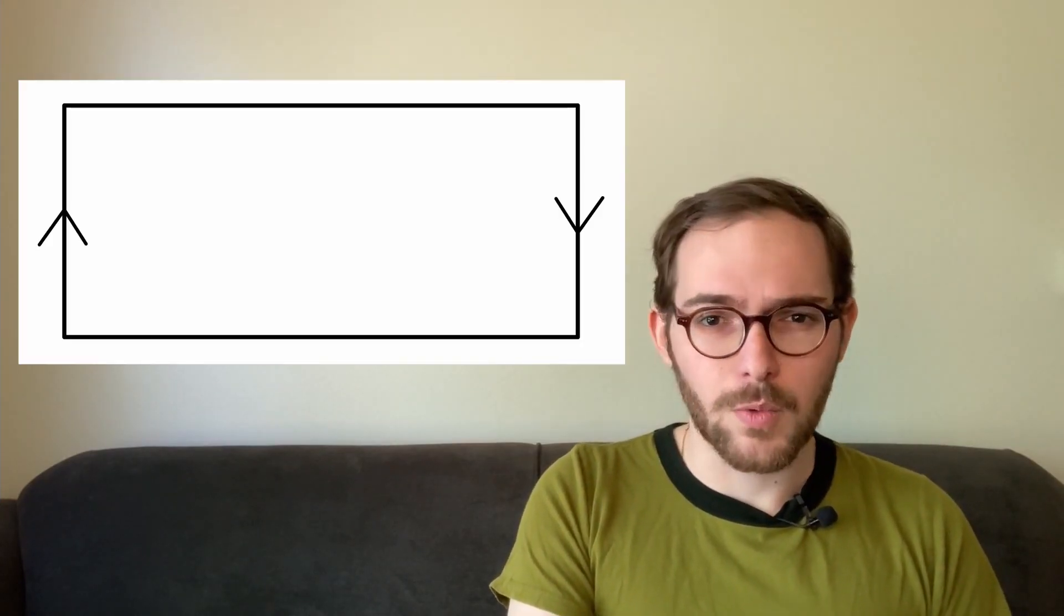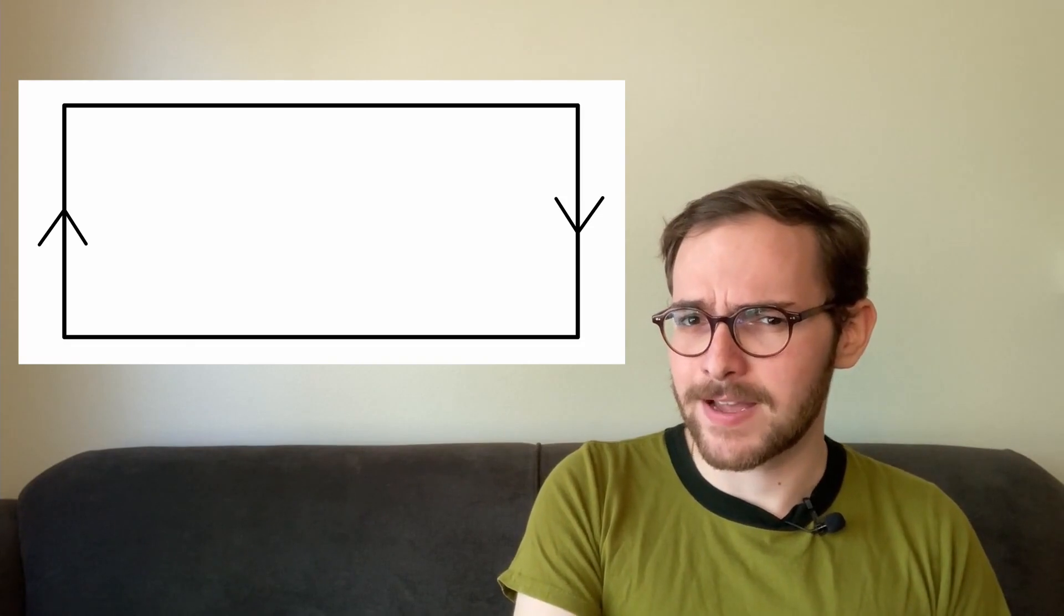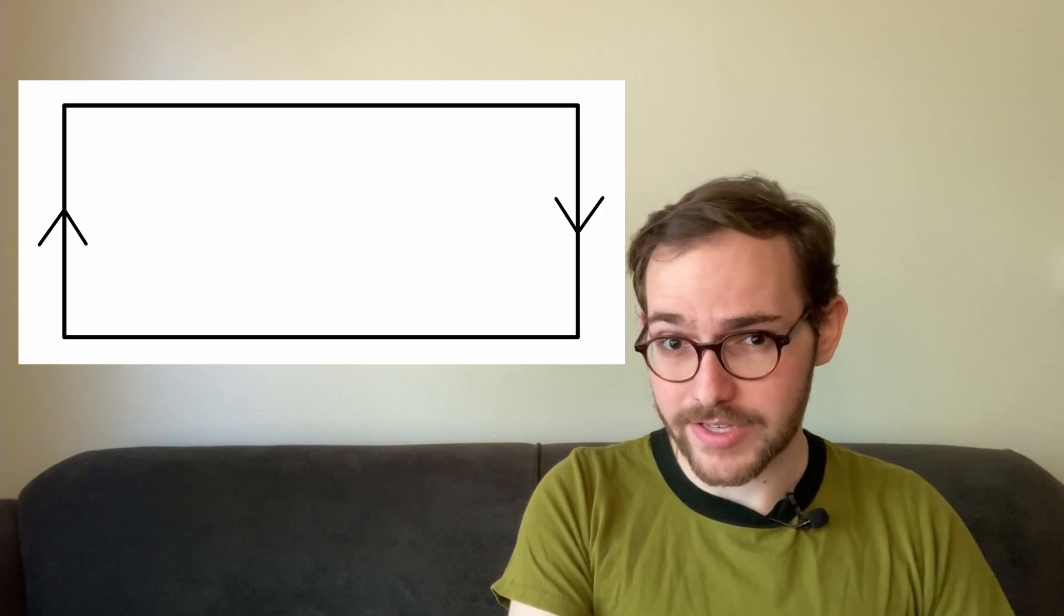There's another way that we could have seen this fact. One way that mathematicians like to think about Mobius strips is with a diagram like this.